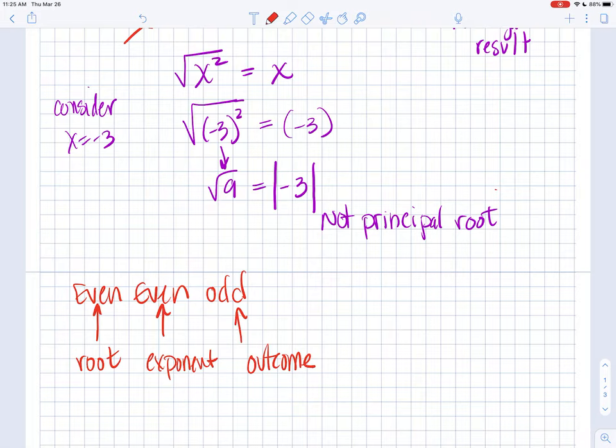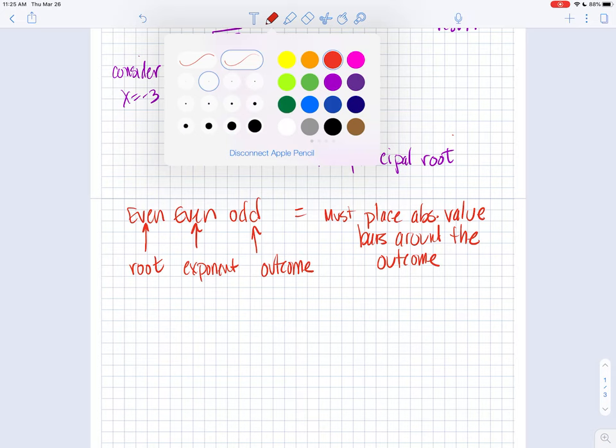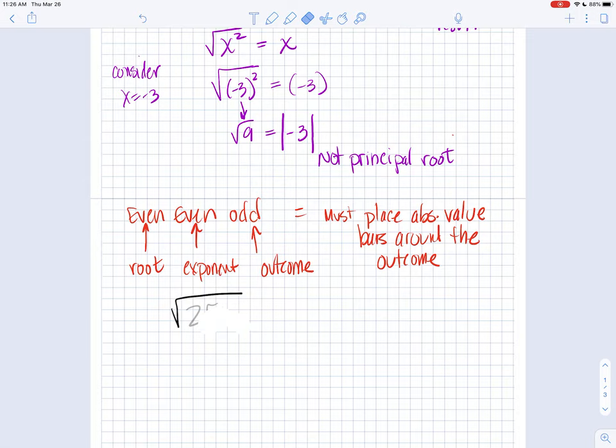is an odd exponent, we have to use the absolute value bars. Must place absolute value bars around the outcome. Just to make sure that we are giving the principal root and not a negative root. So if we really looked technically at the example I gave you in the first lesson, it wasn't 25x squared.